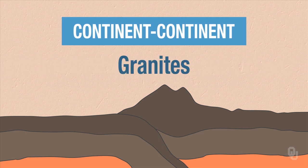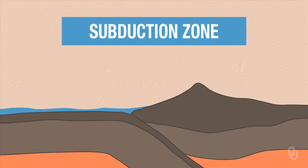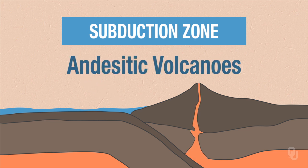What about at subduction zones, where you have an oceanic plate going underneath a continent? You're going to get volcanic activity and acidic volcanoes, which are explosive.